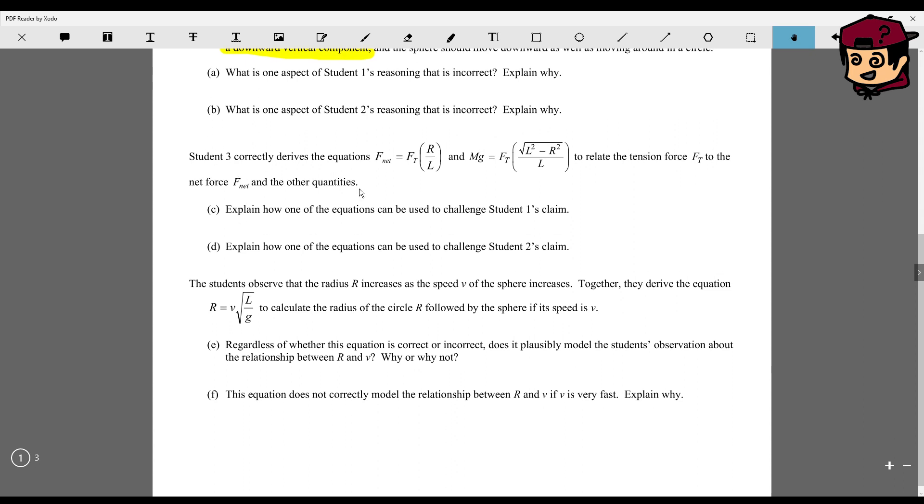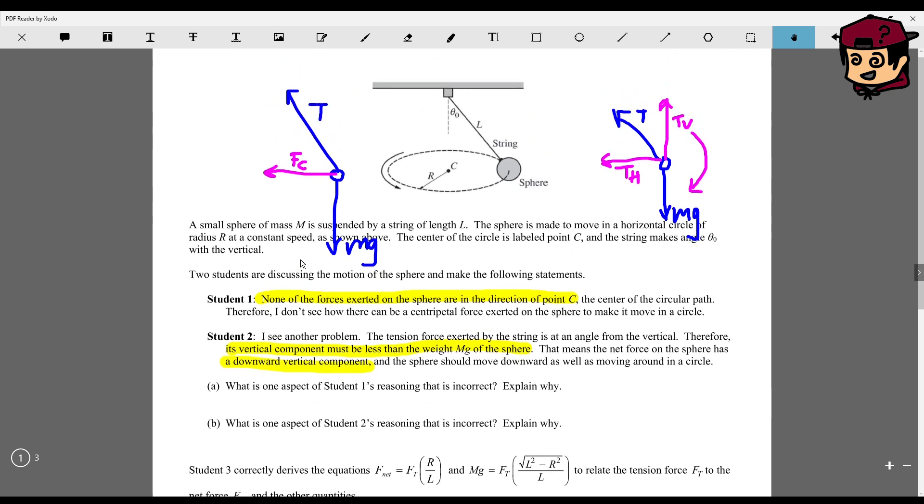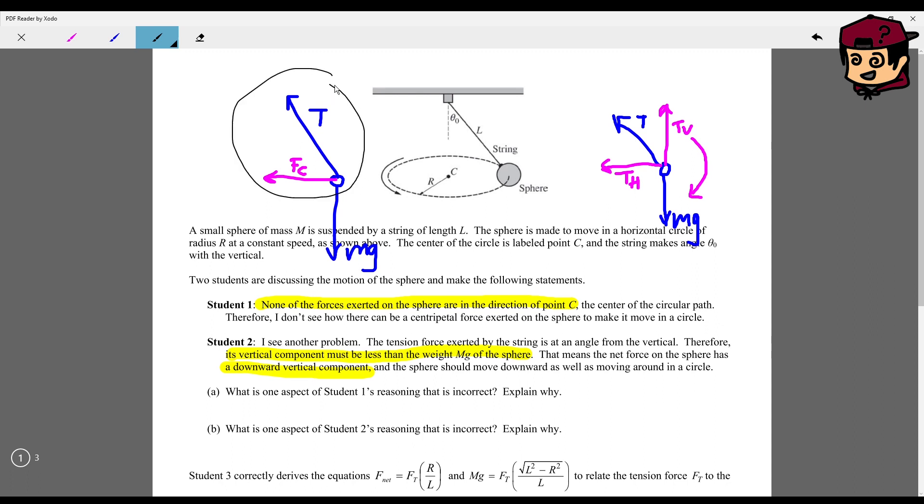Student 3 correctly derives the equations this and that. And we have to use these equations to explain how they could challenge student 1 and student 2. If we look back at this equation right here, we can have another lovely vector diagram. We're just going to use the top part of here. So don't worry about mg. And we've got T and fc. We know here, that's this part, it's a 90 degree angle, right?